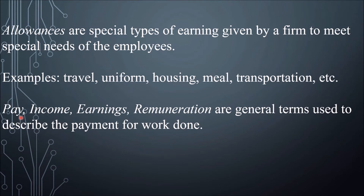Pay, income, earnings, and remuneration are general terms used to describe payment for work done. Allowances are a special type of income; salary is a kind of income; wage is also a kind of income. Pay, income, earnings, and remuneration all refer to the same general concept.